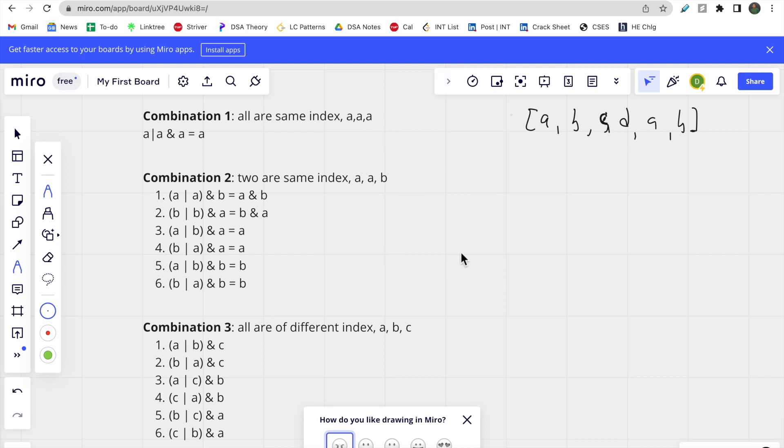There are three conditions possible. The first combination is when all indices are the same, meaning all three numbers are the same. When you perform the beauty operation, you get the number itself as the answer.